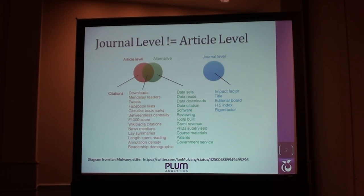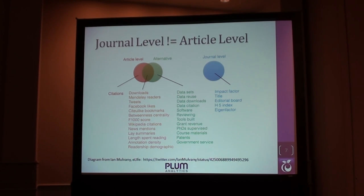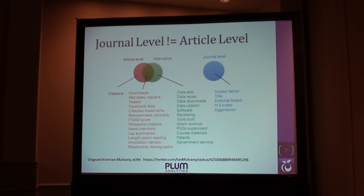We've been using the impact factor, and it's basically a container-based system — we're using journals as substitutes for articles. Now we can measure at the article level. And when we talk about articles now, it's not even about articles anymore. It's about what we call artifacts — pieces of research output that can be measured. So not only are articles going online and being digital, but researchers are using more and more different ways of getting their output out there.